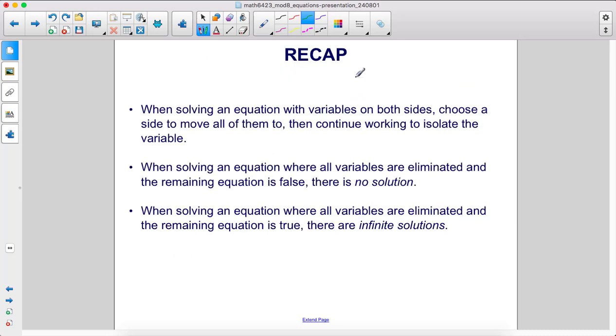To recap: When solving an equation with variables on both sides, choose a side to move all of them to, then continue working to isolate the variable. When solving an equation where all variables are eliminated and the remaining equation is false, there's no solution.